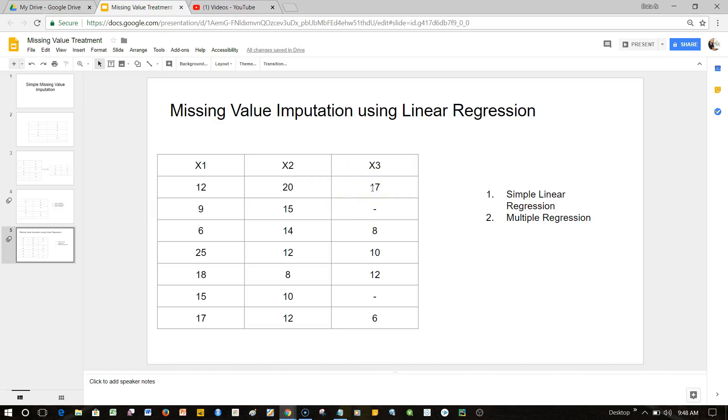If any value is, let's say, minus 0.8 or plus 0.8, near to 1, that means that variable is highly correlated with X3, which we want to predict. Then we can go ahead and use it in linear regression.